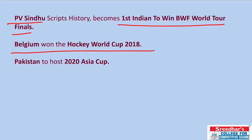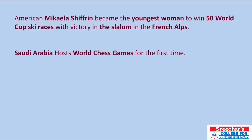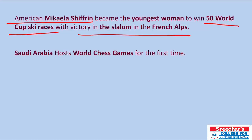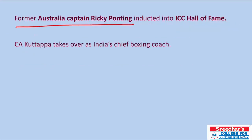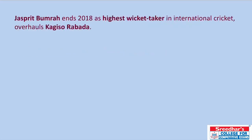PV Sindhu scripted history by becoming the first Indian to win the BWF World Tour Finals. Belgium won the Hockey World Cup 2018. Pakistan is going to host the 2020 Asia Cup. American Mikaela Shiffrin has become the youngest woman to win 50 World Cup ski races with a victory in slalom in the French Alps. Saudi Arabia is going to host World Chess Games for the first time. Former Australian captain Ricky Ponting has been inducted into the ICC Hall of Fame. Jasprit Bumrah was the 2018 highest wicket-taker in international cricket, having overtaken Kagiso Rabada.